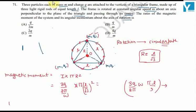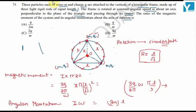Now angular momentum is equal to I into omega, which is equal to 3m R square, that is L squared by 3, times omega.